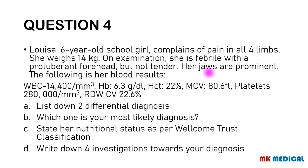Question 4. Louisa is a 6-year-old schoolgirl who complains of pain in all four limbs. She weighs 14 kg. On examination she is febrile with a protuberant forehead but not tender. Her jaws are prominent. Lab results: WBC 14,400; HB 6.3; hematocrit 22%; MCV 80.6; platelets 280,000 per cubic millimeter; RDW 22.6. Questions: list two differential diagnoses; which is your most likely diagnosis; state her nutritional status per Wellcome Trust classification; write down four investigations toward your diagnosis. You may pause the video.